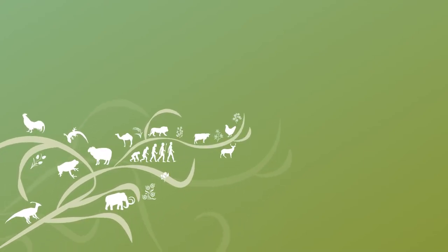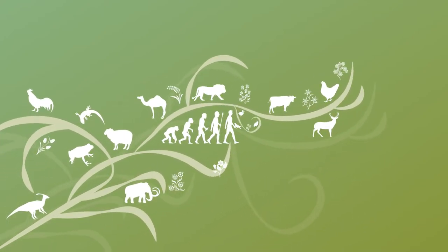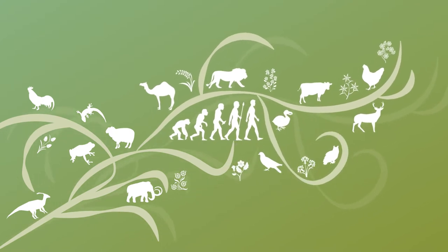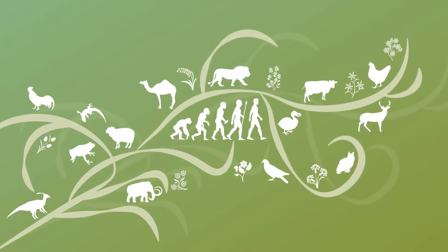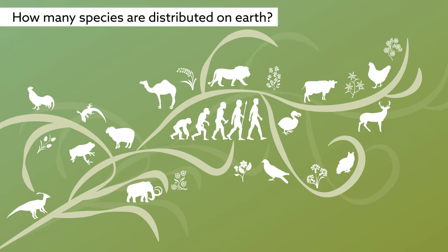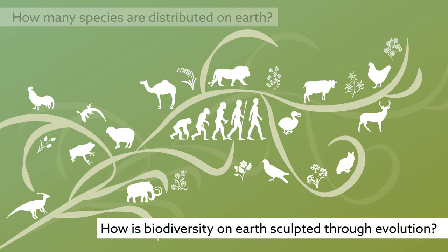So, if scientists can get a handle on that figure, they can begin to understand the fundamental processes that have shaped the biodiversity patterns found in nature. Essentially, the question of how many species are distributed on Earth becomes how is biodiversity on Earth sculpted through evolution?